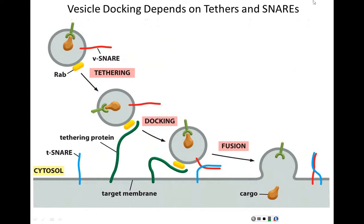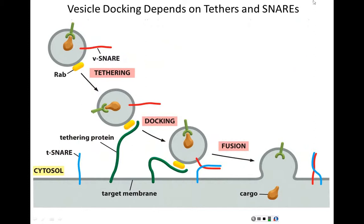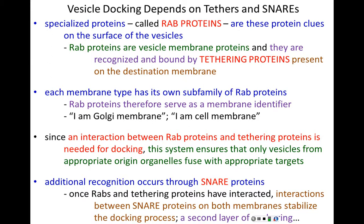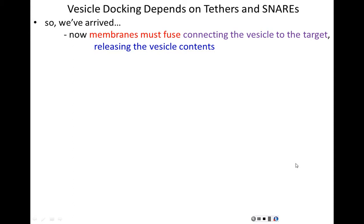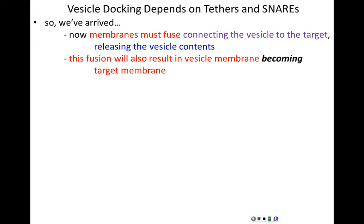This recognition and binding is then stabilized through a second set of proteins called SNARE proteins. There are vesicle SNARE proteins called V-SNAREs and membrane SNARE proteins, which are complementary binding proteins on the surfaces of both membranes. Those SNARE proteins interact with one another and stabilize the docking process. When RABs and tethering proteins have interacted and the SNAREs have interacted as well, we are fully docked — the vesicle is stably recruited to its target membrane. Docking is just half of the story.